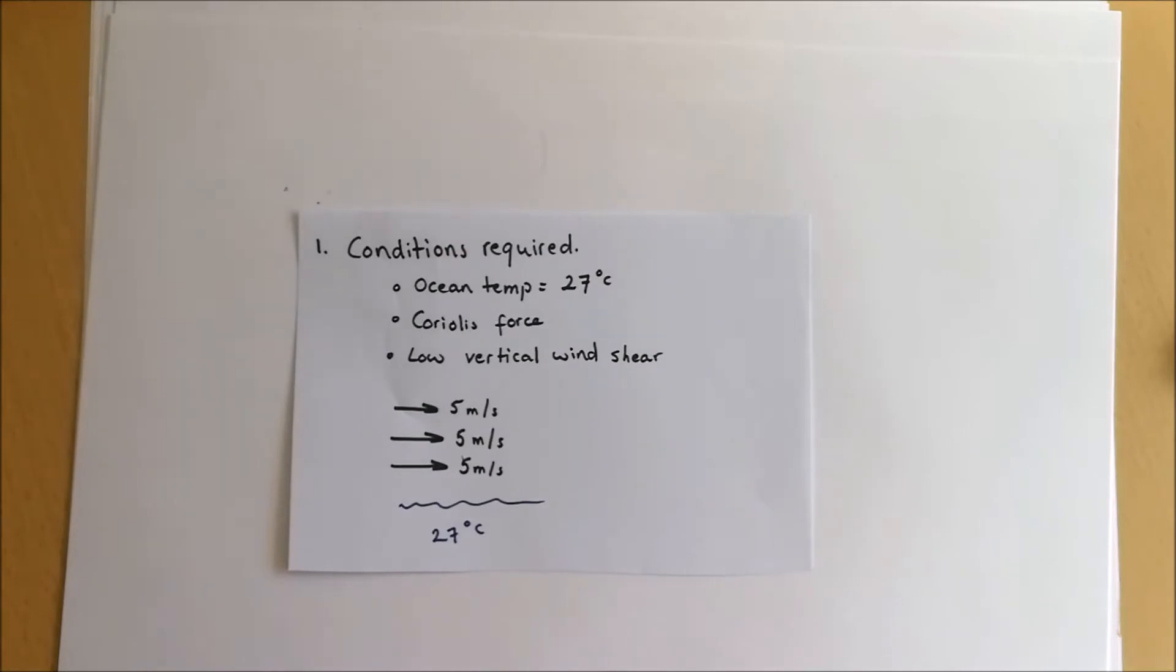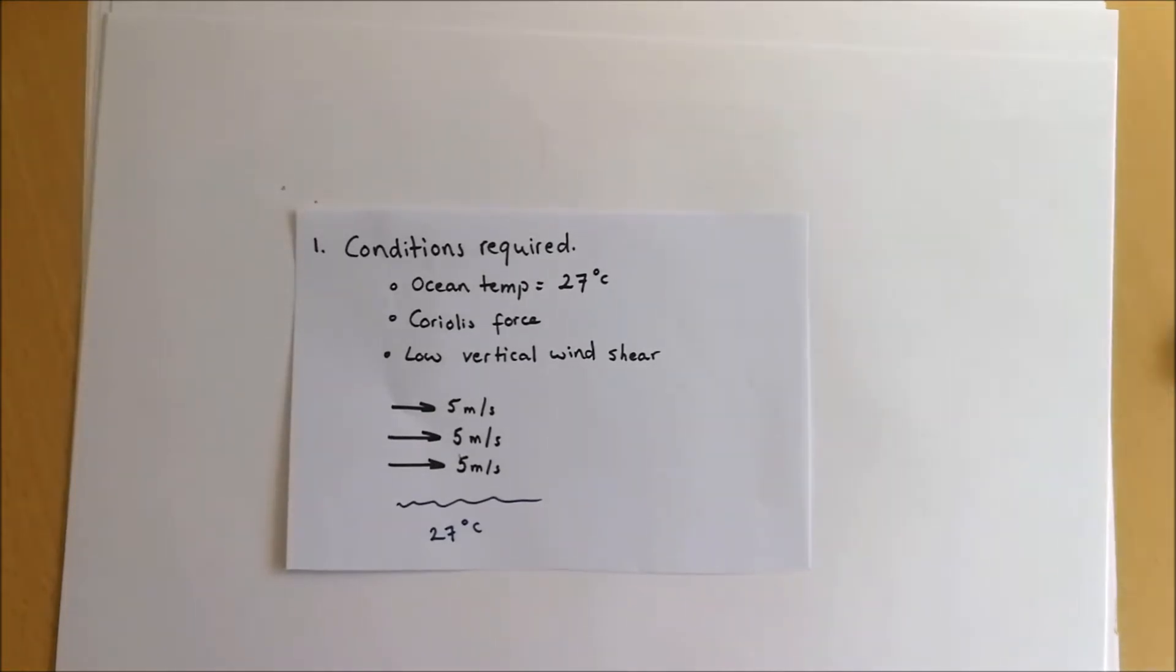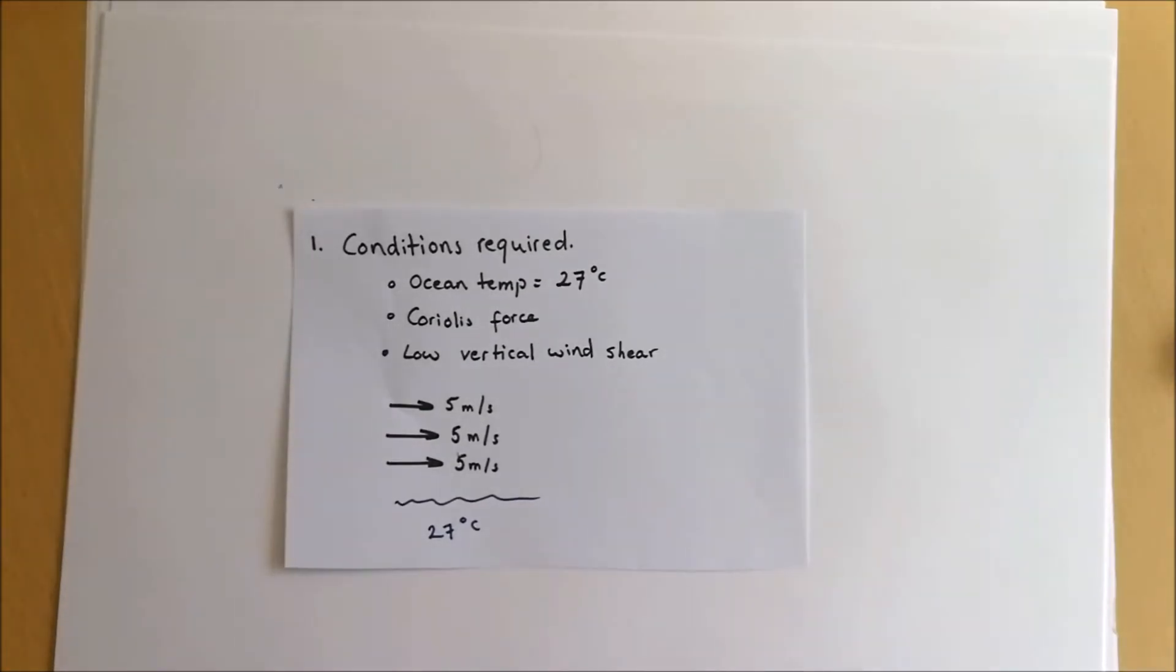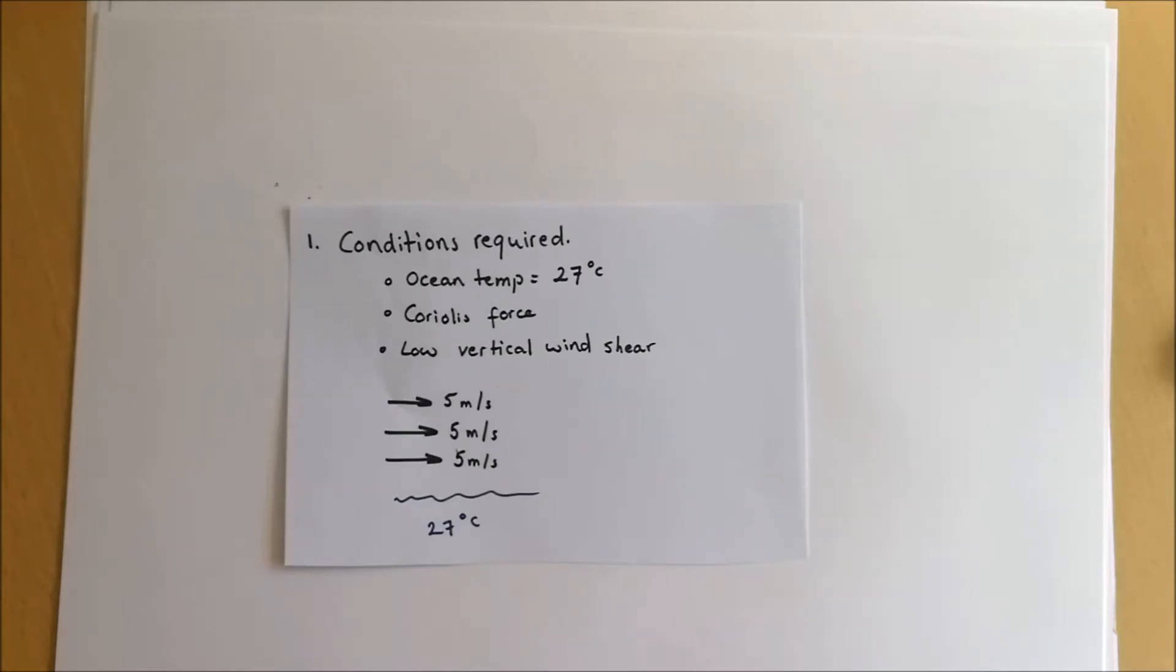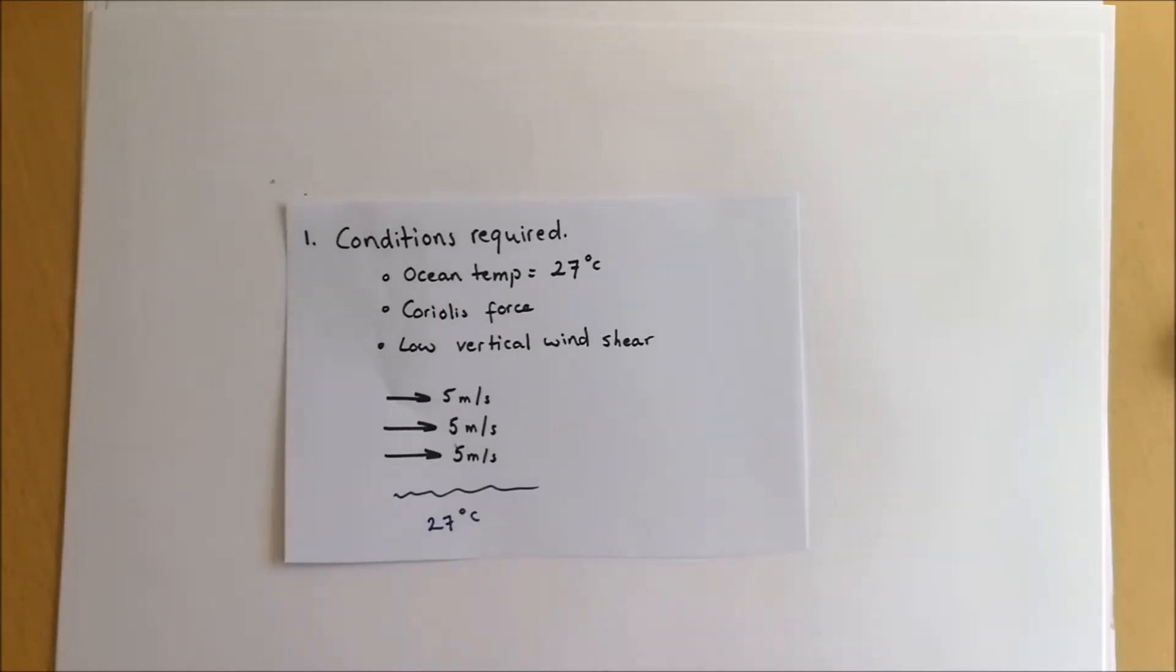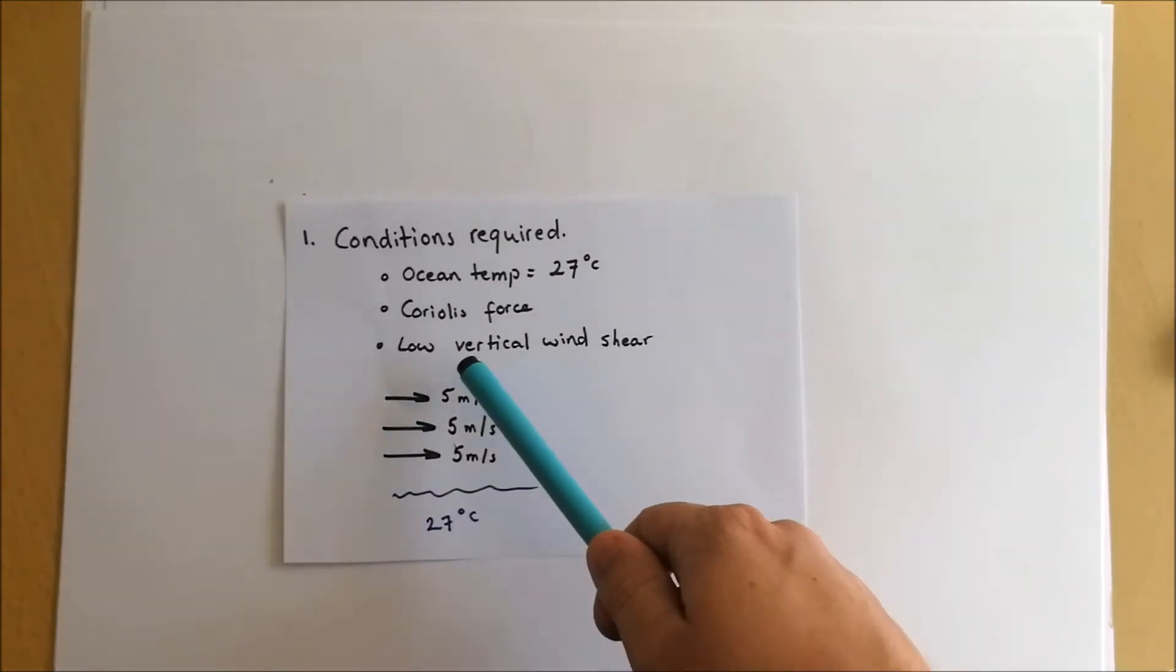We also need the Coriolis force. We've talked about that before in our global atmospheric circulation video. It's that force caused by the rotation of the Earth that causes winds to divert over to the right or the left depending on what hemisphere you are in. That Coriolis force is what causes the tropical storms to start spinning and provide that kind of stereotypical image of a hurricane from space of those rotating clouds.